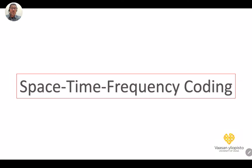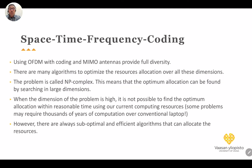Hello everybody, welcome to clip 4 of part 5: Modern Modulation Techniques in Wireless Communication. In clip 3 we went through the OFDM communication system — the structure of the transmitter and receiver — and we discussed some of the benefits of using OFDM. Today in this clip we talk about space-time-frequency coding.